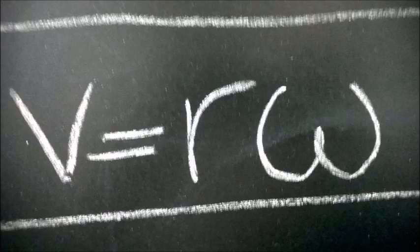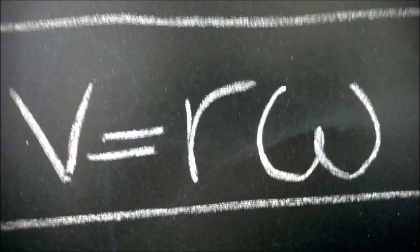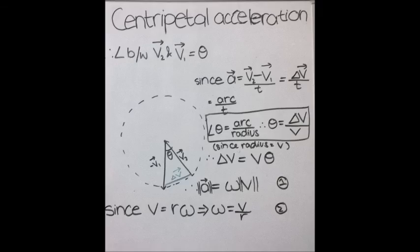I also told you the relation between V and omega, which is V is equal to R omega. From that, we get the second equation, omega is equal to V upon R.